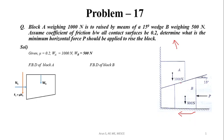At the inclined contact surface between block A and wedge B, the normal reaction N2 acts perpendicular to that surface. Since block A moves upward, the friction force F2 acts in the downward direction along that surface, where F2 equals mu times N2. N2 makes an angle of 15 degrees from the vertical, so its vertical component is N2 cos 15 and horizontal component is N2 sin 15. Similarly, F2 makes 15 degrees from the horizontal, giving vertical component F2 sin 15 and horizontal component F2 cos 15.